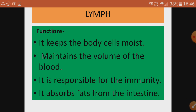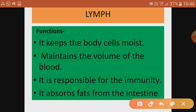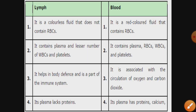When plasma and WBC come out of capillaries, lymph can indirectly maintain the volume of the blood. Lymph is also responsible for immunity because it contains WBCs, which are directly related to the immunity of the body. Additionally, lymph absorbs fat from the intestine — fat is absorbed by the lymph capillaries in the small intestine.